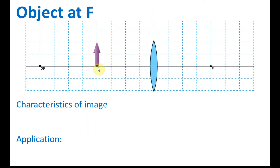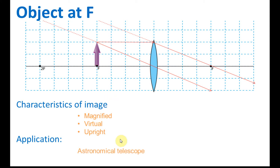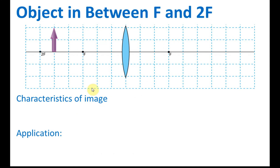Now, what happens if we put the object exactly at F? Rule one: the light ray parallel to the principal axis is refracted through F. The light ray through O is not refracted. We extend this line and find it is parallel — and all parallel lines converge at infinity, so the image forms at infinity. The image is magnified, virtual, and upright. This is used in an astronomical telescope.